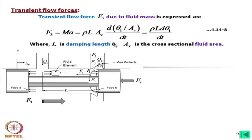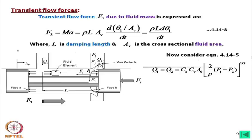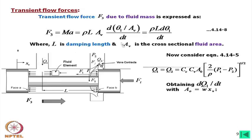Av is the cross-sectional ring area of the spool land, used to compute the fluid volume inside the spool chamber. Using the continuity equation q1 = q2 and the orifice equation, with area a0 = w × xv, we can write and differentiate the flow equations to get the transient force expression.